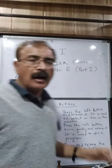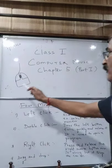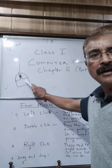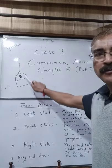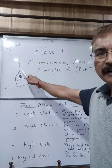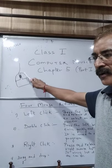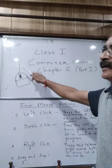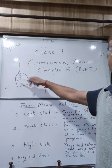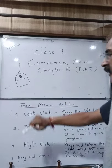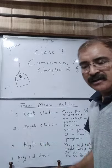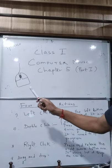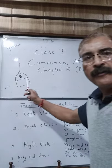A mouse - I'm talking about a computer mouse - is a part of a computer which is used for pointing at items on the desktop. Items means it can be a file, folder, or icons that you can see. So the mouse is a pointing device, and you use it to point on icons.